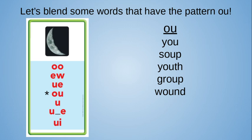And our last pattern — let's blend some words that have the pattern o-u. It's still making that ooo sound. The first word says y-oo, you. That might look like an easy one, but believe it or not, more people misspell that word than more difficult, longer words. S-oo-p, soup. Y-oo-th, youth. Go ahead and try blending those last two words. Our last two words are group and wound, like an injury.